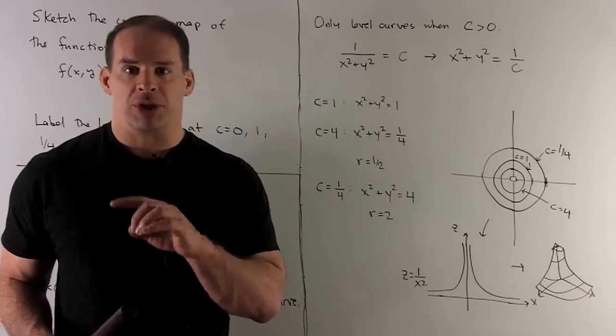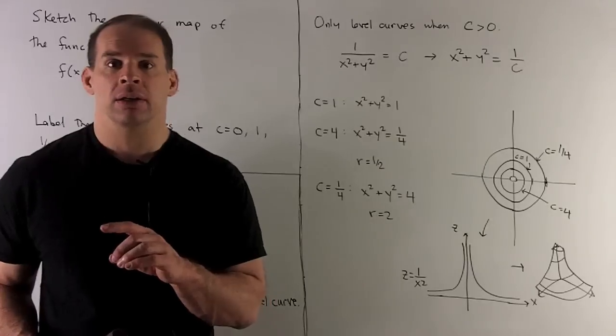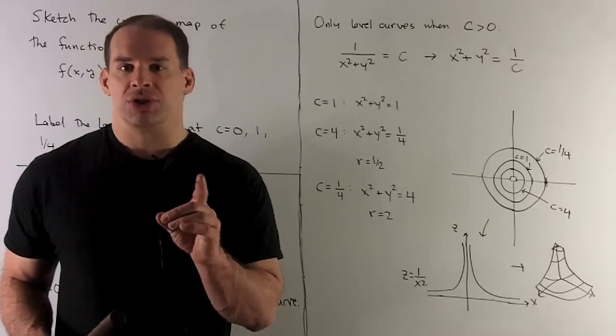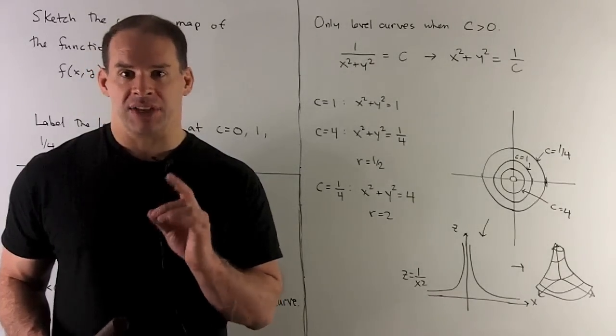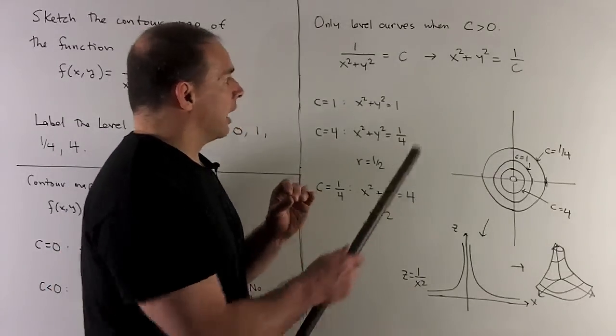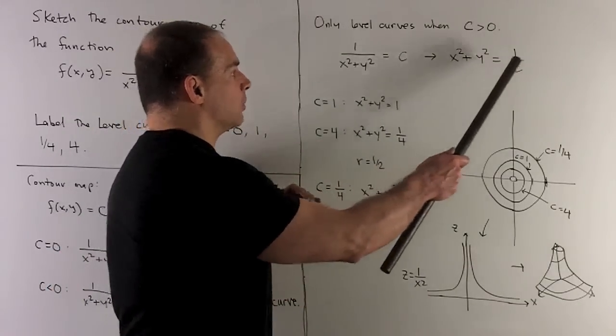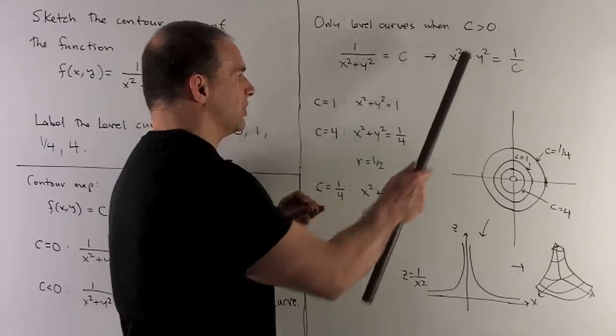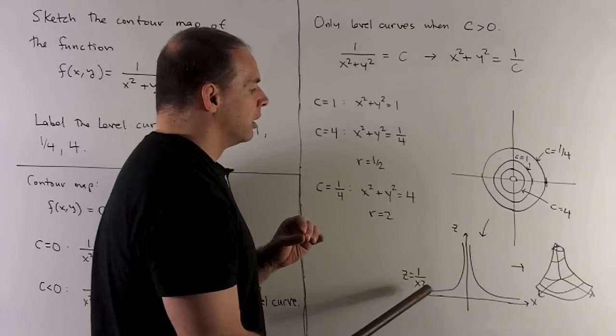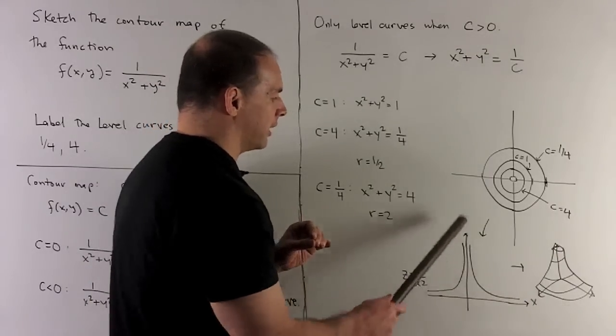Let's take a look at the three-dimensional picture to see why this is happening. It'll first help to set y = 0 just to see what's happening in the xz-plane. If I do that, set c = z and then set y = 0, that's going to give me z = 1/x². That function is going to look like this.